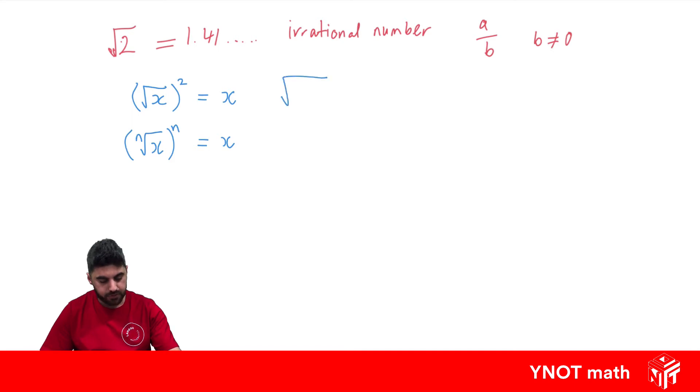If we have root xy, so two numbers inside a root, that's going to equal their individual roots times each other as well. If we have the root of a fraction a over b, that'll equal the individual roots of the numerator over the root of the denominator.